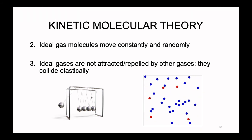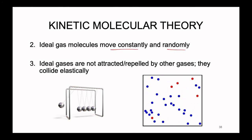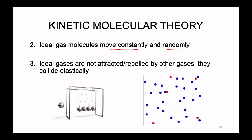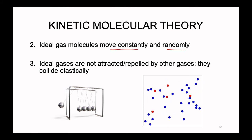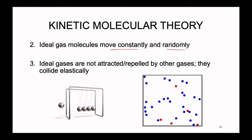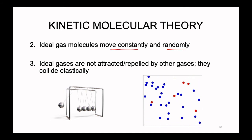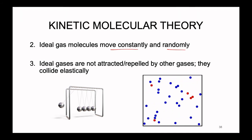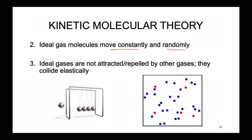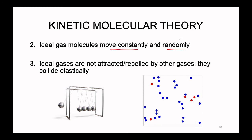Point two: ideal gas molecules move constantly and randomly. This second point is really what set off the Newtonians and caused them to disown chemistry as a subfield of physics. Ideal gases move constantly and randomly — it was the only way that Boyle's law, Amonton's law, Dalton's law, and Henry's law could be made sense of. If these molecules were not moving constantly and randomly, the properties of gases simply would not make sense.